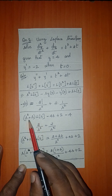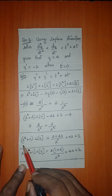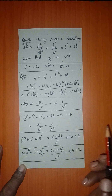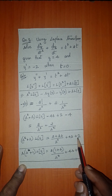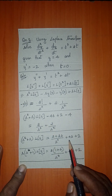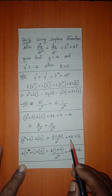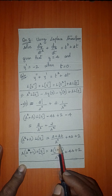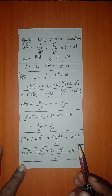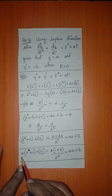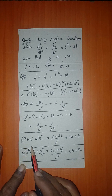Left hand side: (s² + s) · L{y}. The constants −4 + 2 = −2, which moves to the other side as +2; and −4s moves to the other side as +4s. On the right hand side, taking LCM as s³, we get 2 + 2s. Now s² + s has s as a common factor, so it factors as s(s + 1).